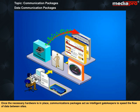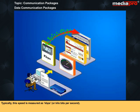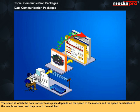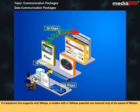Once the necessary hardware is in place, communications packages act as intelligent gatekeepers to speed the flow of data between sites. Typically, this speed is measured in kbps, or kilobits per second. The speed at which the data transfer takes place depends on the speed of the modem and the speed capabilities of the telephone lines, and they have to be matched. If a telephone line supports only 56 kbps, a modem with a 128 kbps potential can transmit only at the speed of 56 kbps.